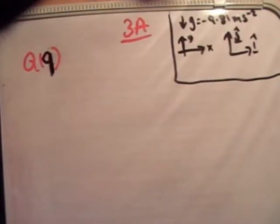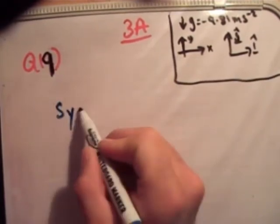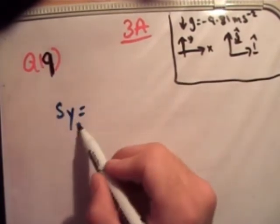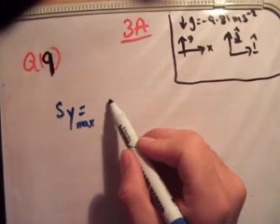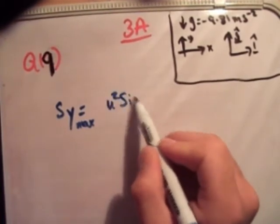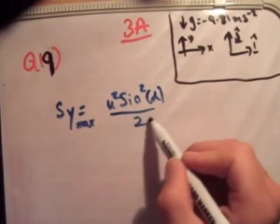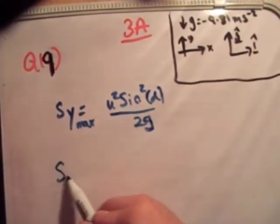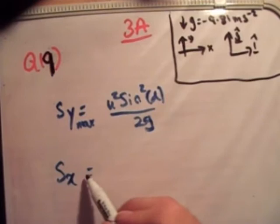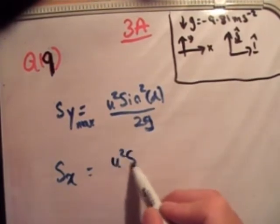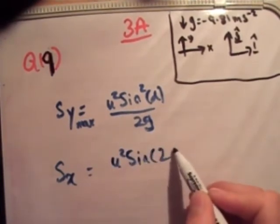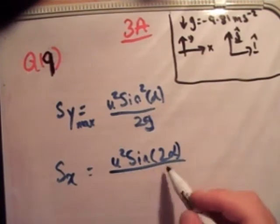Now, to be honest, this one leads directly on from question 18 on page 73. So I'm not going to bother doing all the things I did in question 18 again. So we found in question 18 that at the maximum height, s sub y max is equal to u squared sine squared alpha over 2g. And s sub x, the range, is equal to u squared sine 2 alpha over g.